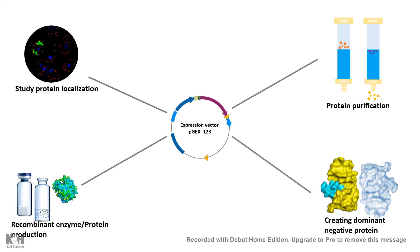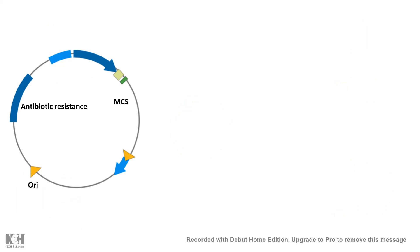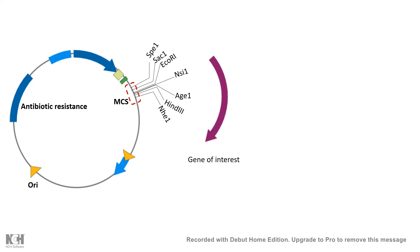Geneticists could also use the expression vector to create dominant negative perturbations in cells, so expression vectors have a wide variety of uses. Like any vector, this expression vector also has antibiotic resistance which works as a selectable marker, an origin of replication which allows the vector to multiply, and also a multiple cloning site.